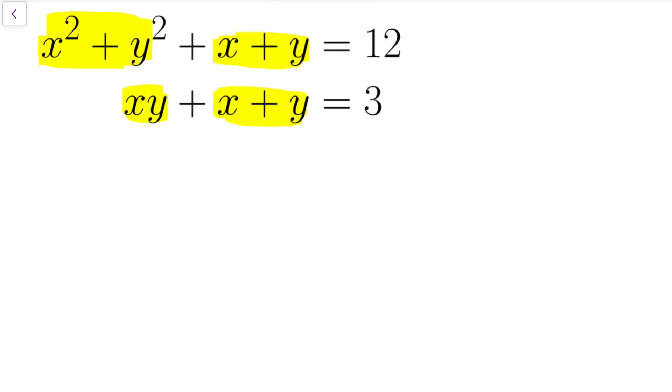In fact, if I let a = x + y and b = xy, then I can express the yellow parts in terms of either a or b for the three parts that I've ticked, while for the last part, x² + y² is a² - 2b.